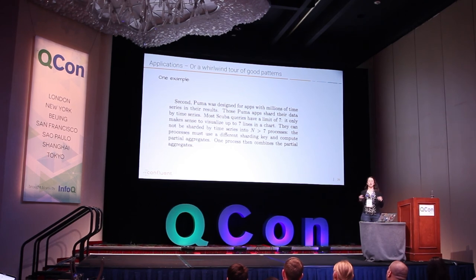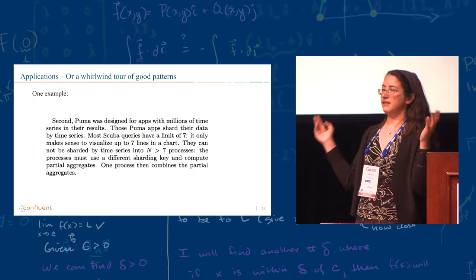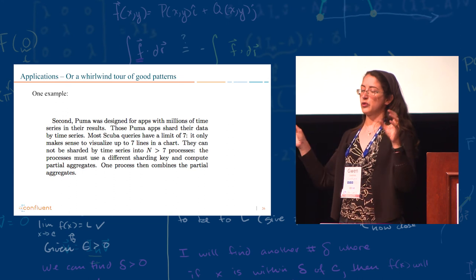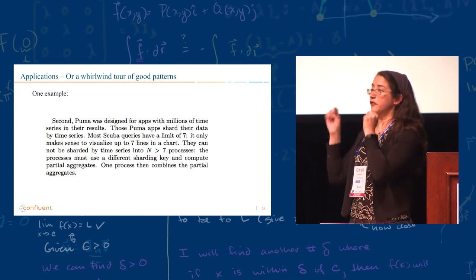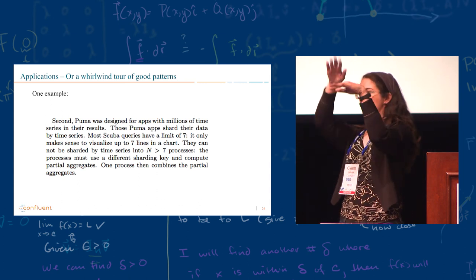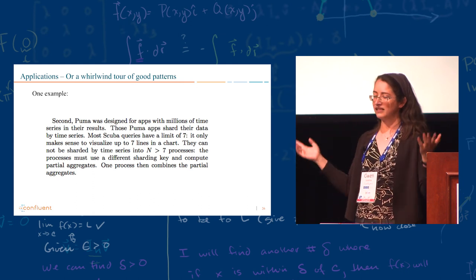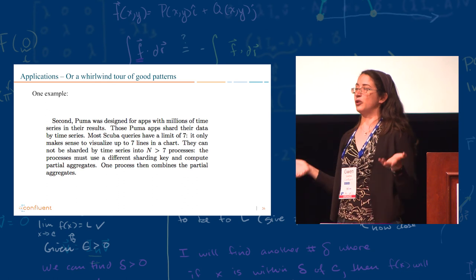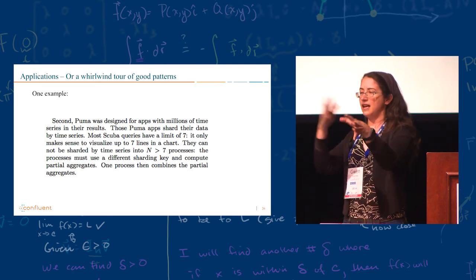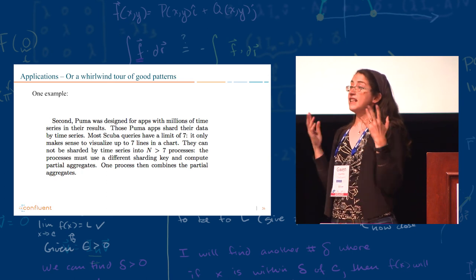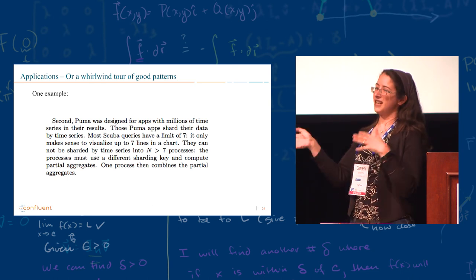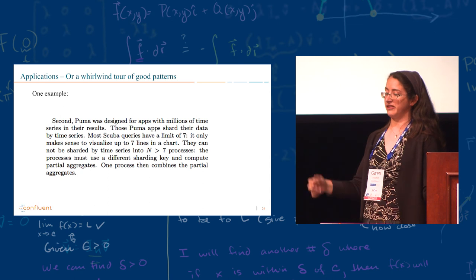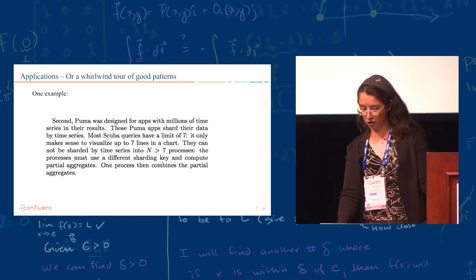And then they go to applications, which is just a whirlwind tour of very useful design patterns. So one example is that Puma, the SQL part, was optimized for applications with millions of different time series. But for Scuba, apparently most of the queries is just drawing lines on the chart, and who wants more than seven lines on the chart? You can't even read it. So they had to learn how to handle that. So they do extra sharding and pre-aggregation and the real aggregation. And that's something that I also always do, because sometimes you use it to also handle keys with a long skew that screw up your sharding. So that's a super useful pattern.